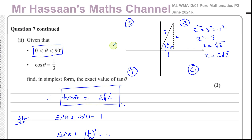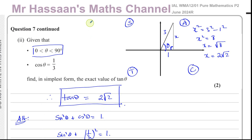That completes question number 7 from the June 2024 R paper of Pure Mathematics P2. Other questions from this paper can be found in the playlist shown at the end of this video. You can also find other trig equation questions in the trigonometry playlist, and subscribe to the channel by clicking the link. Thank you for watching and see you soon.